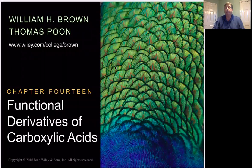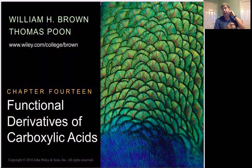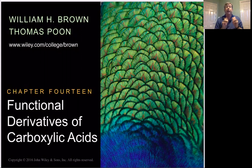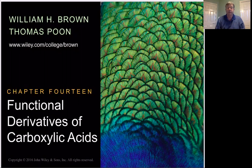Organic chemistry 2330. We're going to talk about chapter 14 today, the functional derivatives of carboxylic acids. In chapter 13, we learned about what carboxylic acids were and a couple of the different functional groups they had, including the acid chloride. In this chapter, we're going to talk about all the different types of carboxylic acid derivatives and how to interconvert them between each other.